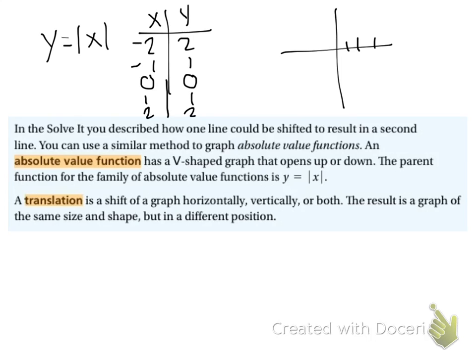So if we sketch this out, 1, 1, 2, 2, negative 1, 1, negative 2, 2. We get a V shape. So absolute value functions look like a V. And so this is our simplest form.